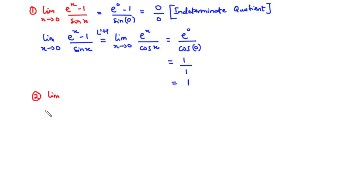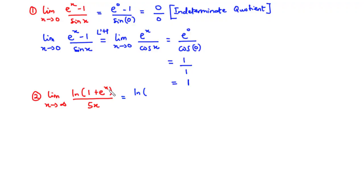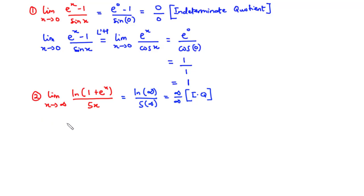Next, evaluate the limit as x approaches infinity of ln(1 plus e to the power x) divided by 5x. Direct substitution gives ln of infinity divided by 5 times infinity, which is infinity over infinity — an indeterminate quotient. Therefore, we can apply L'Hôpital's rule.